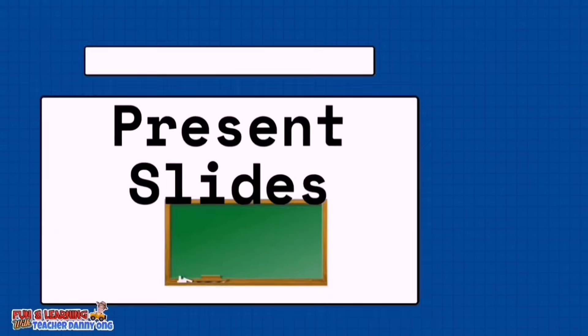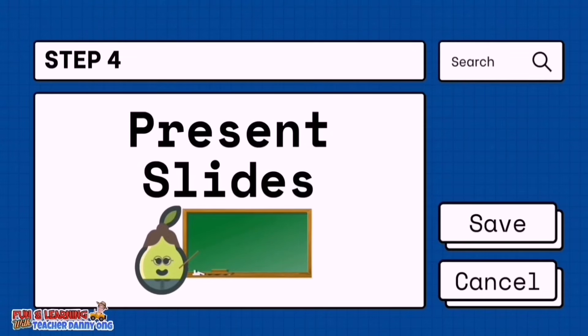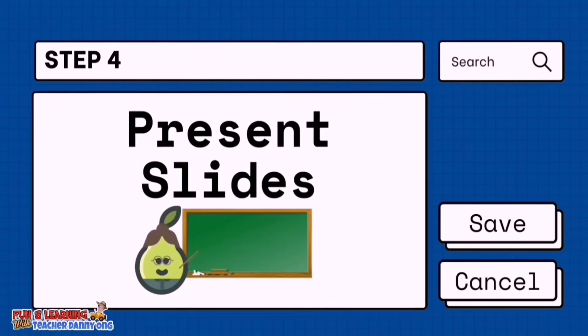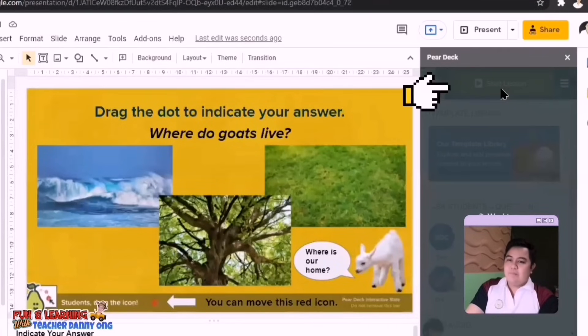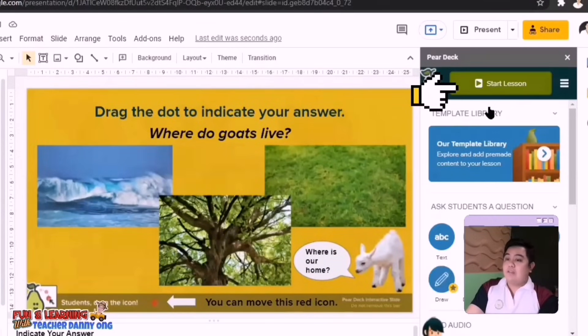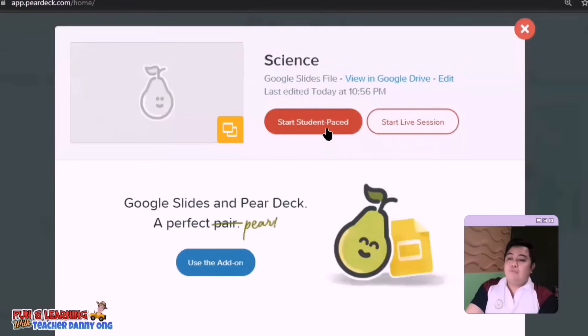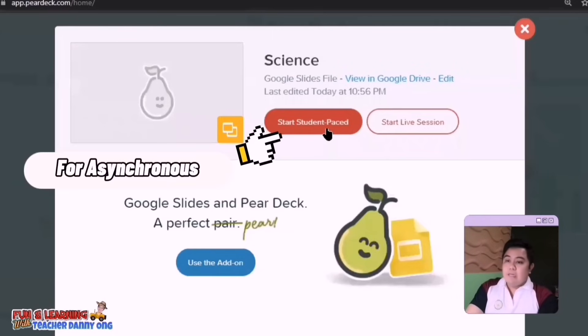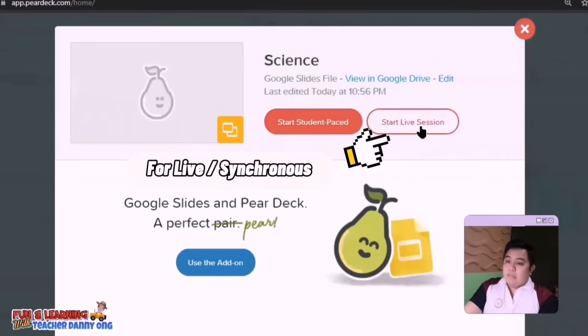Now step four is presenting your slides in class. Now to present your slides, simply click the green start lesson in the PeerDeck sidebar and start collecting their answers. Now in collecting the responses, you have two options. First, you can start student-paced, meaning this can be answered asynchronously or in any time the student wants, whether at the first hour in the morning or in the afternoon. Or this can be started live during your synchronous sessions.